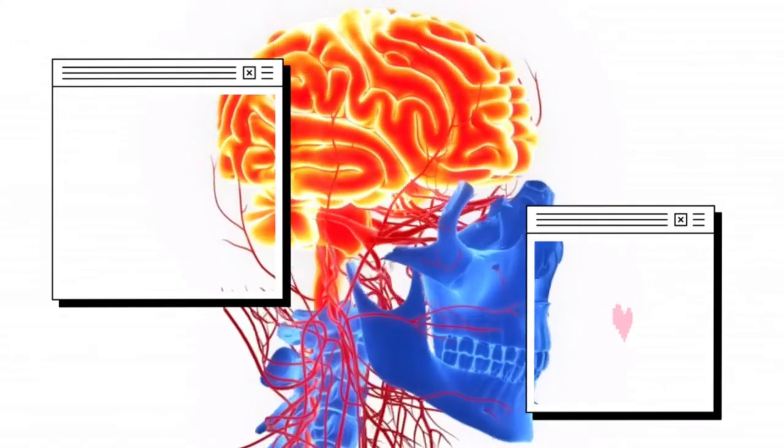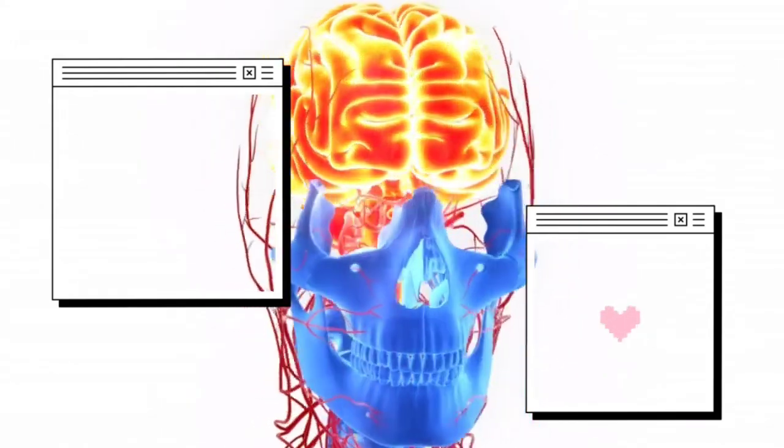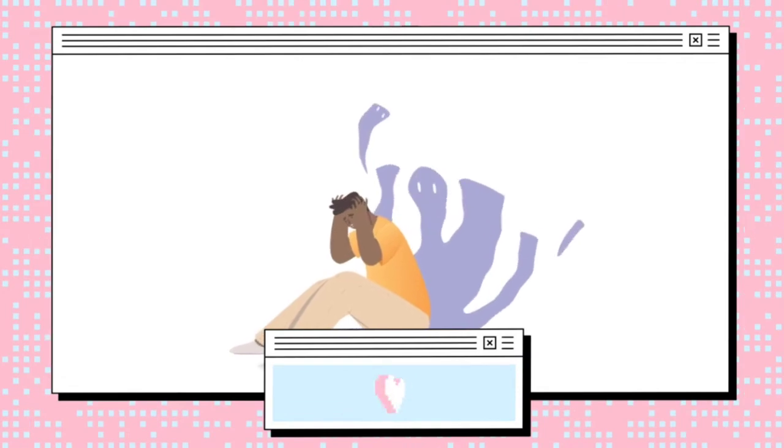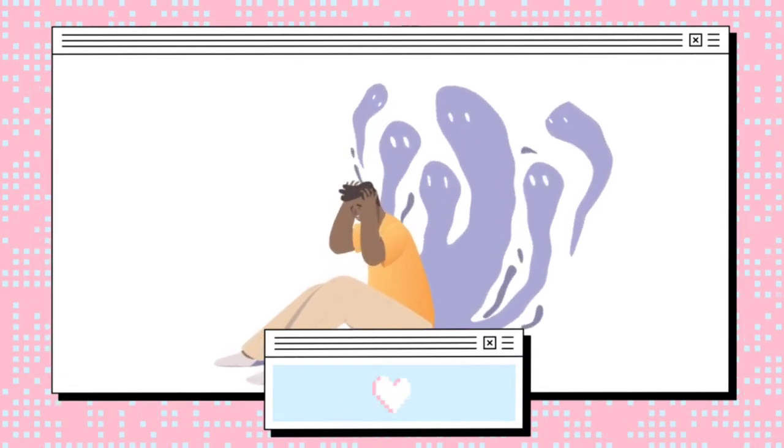These hormones rev up our heartbeat and send blood rushing to the areas that need it the most in an emergency situation, such as our muscles, our heart, and other important organs.